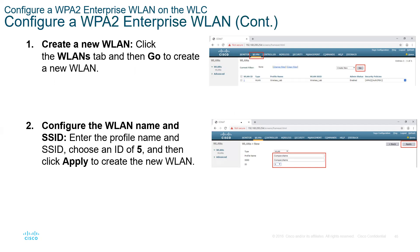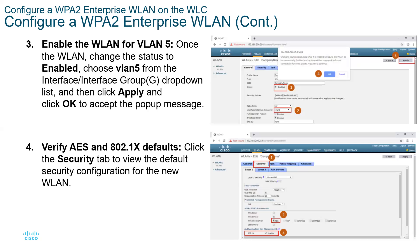Once we have created our wireless LAN — we've done this part already. Step number four is where we select the security protocols to use. When we first created the network, we used WPA2 and AES encryption.